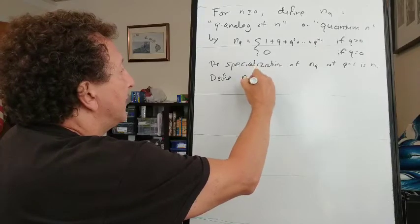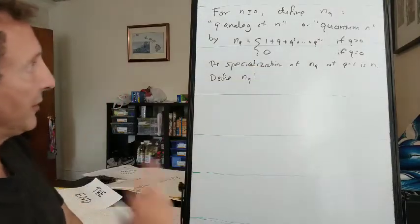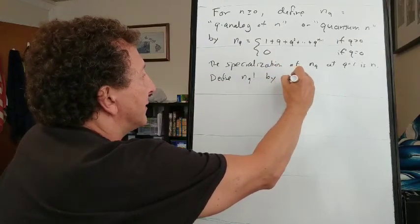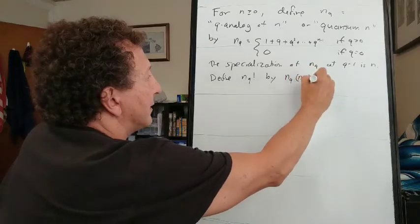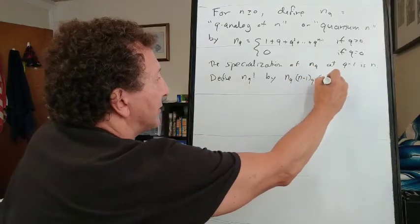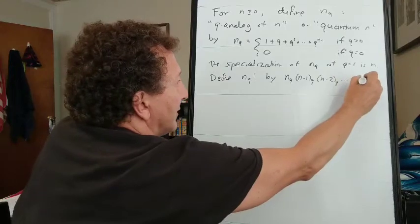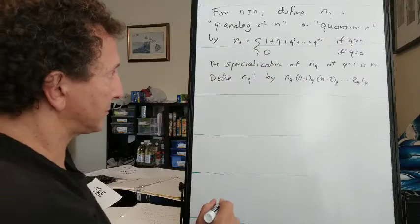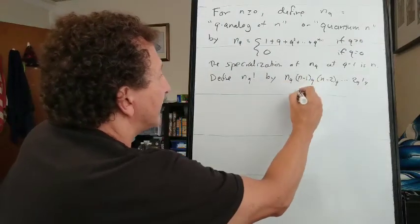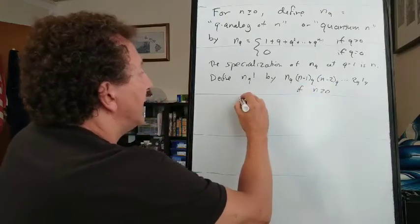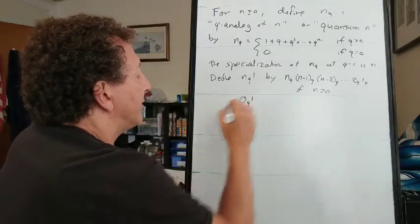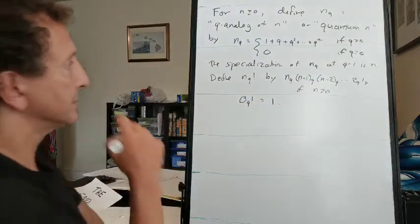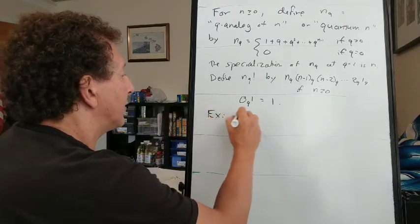Then we define a factorial function on the quantum integers, n sub q factorial, by quantum n times quantum n minus 1 times quantum n minus 2, etc., all the way down to 1. Quantum 1 is just 1. That's if n is greater than or equal to 0, and we define the factorial of quantum 0 to be 1.